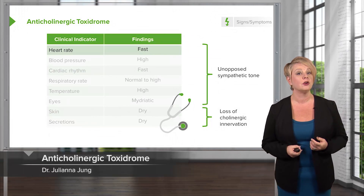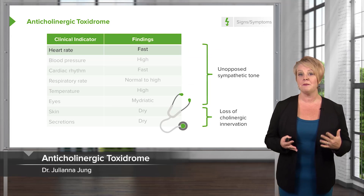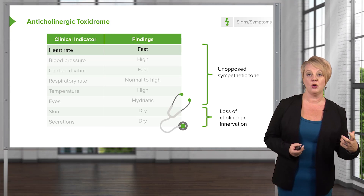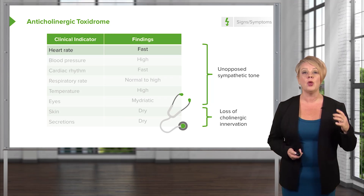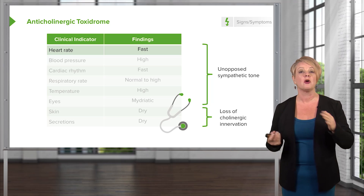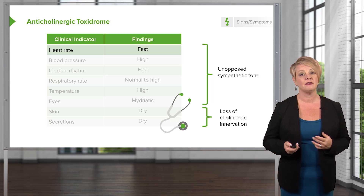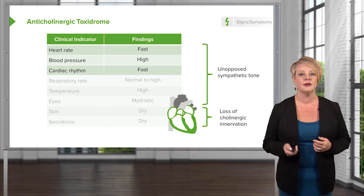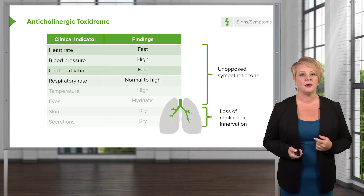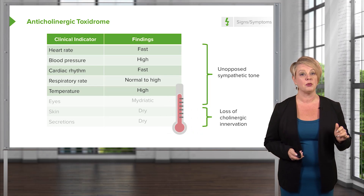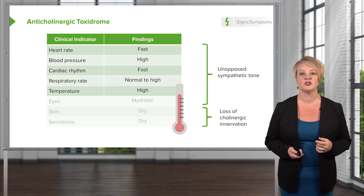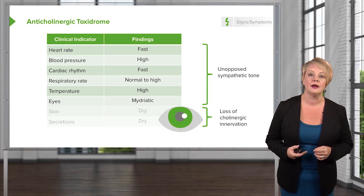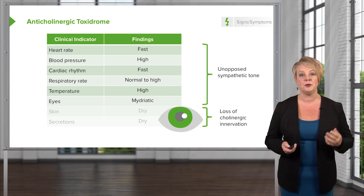By contrast, we have the anticholinergic toxidrome. When you block the parasympathetic nervous system, you have unopposed sympathetic innervation, so many features are similar to sympathomimetics: fast heart rate, high blood pressure, rapid cardiac rhythm, and possible tachyarrhythmias. Generally not a lot of effect on respiration, but very commonly an elevated temperature — an important feature of anticholinergic toxicity. Like sympathomimetic patients, you'll have mydriasis, large pupils. However, this is where it gets different.